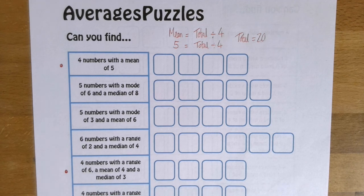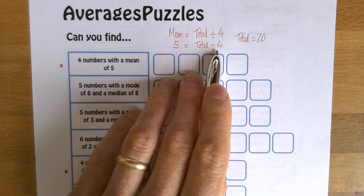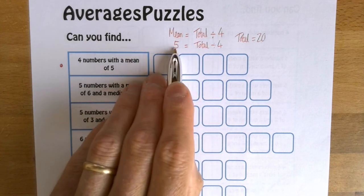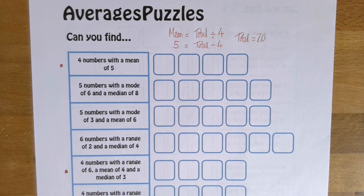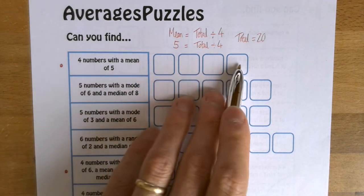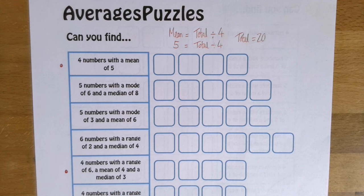Now, if that's not obvious to you, I did it using inverse operations. I did the opposite of dividing by four. I multiplied five by four to get what that total has to be. So this is a nice easy question. All I need are four numbers that add up to 20.